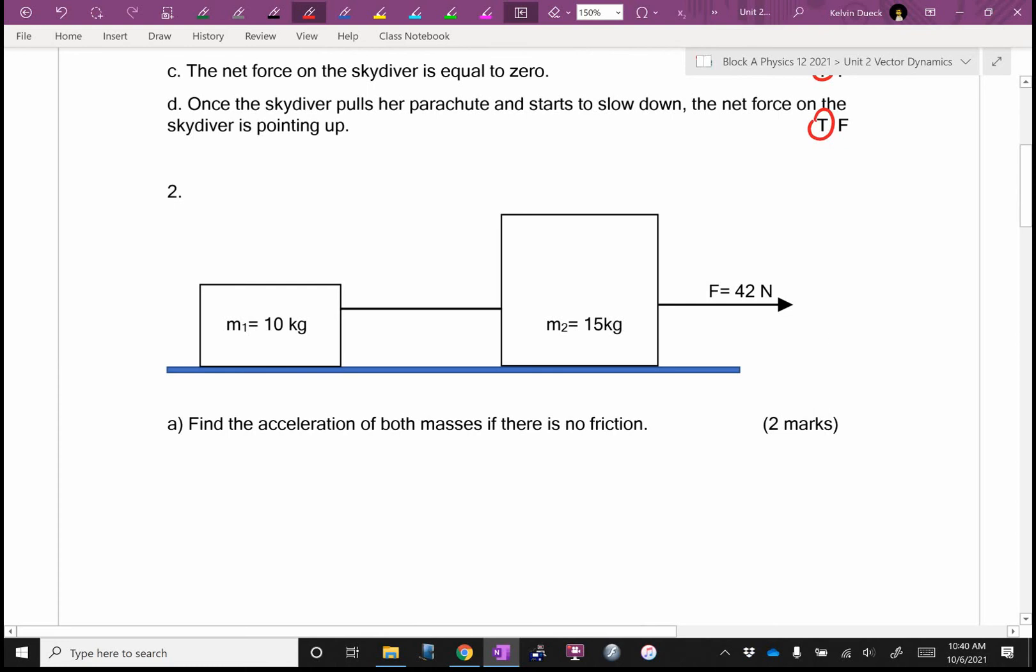Number two. Find the acceleration of both masses if there's no friction. This is a job for a free body diagram. It's going to be M1g, normal force number one, tension, M2g, normal force number two, F applied, tension. Who's winning? F applied. And then minus tension plus tension equals M all A.